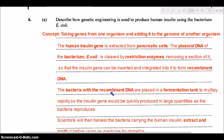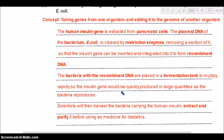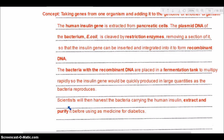The bacteria with the recombinant DNA would be placed in fermentation tanks, where they multiply rapidly. As they multiply, the insulin gene is also quickly produced in the process, generating large quantities. The scientists then harvest the bacteria carrying the human insulin, and extract and purify it before it can be used as medicine for diabetics.